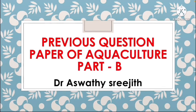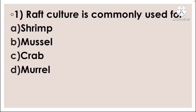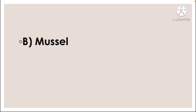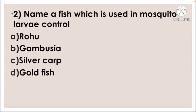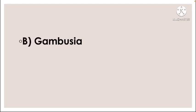Good evening everyone. Discussing the aquaculture previous question paper, Part B. First question: Raft culture is commonly used for — option A shrimp, option B mussel, option C crab, option D murrel. Correct answer: option B, mussel. Next question: Name a fish which is used in mosquito larvae control — option A rohu, option B gambusia, option C silver carp, option D goldfish. Correct answer: option B, gambusia.